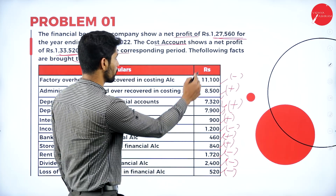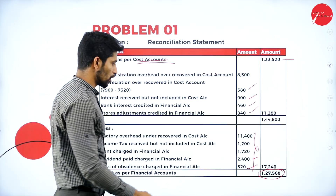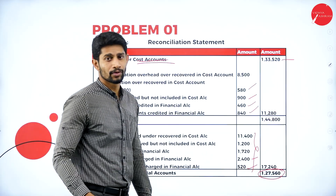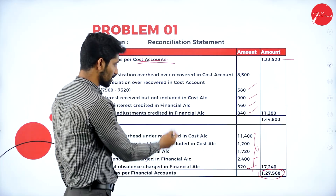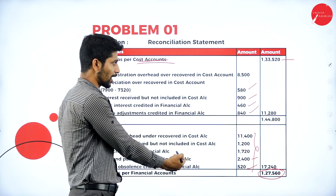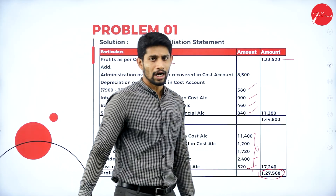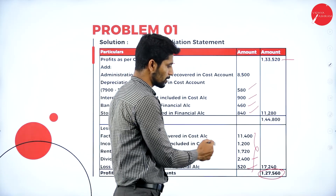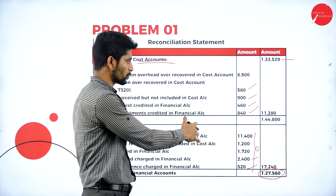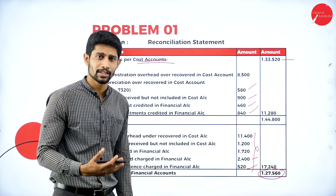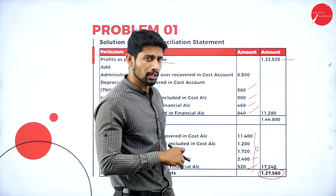Cross-verify with the problem: the profit as per financial account given in the problem is Rs. 1,27,560, and here we also got Rs. 1,27,560. That means because of these additions and subtractions you can see the difference in profit between cost accounts and financial accounts. If you do these adjustments you will get the exact picture of why the difference is showing. This is how you are supposed to solve the problem — they might ask this for 10 or 15 marks in your main exam. Let us move to the next question.